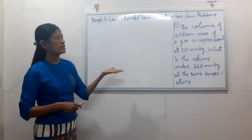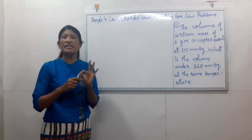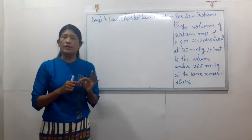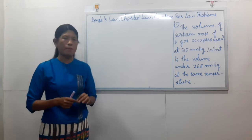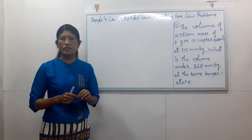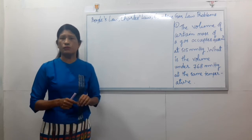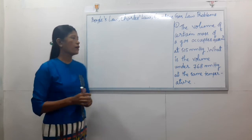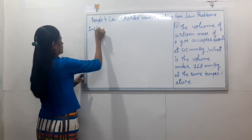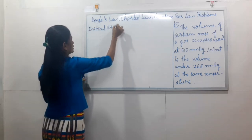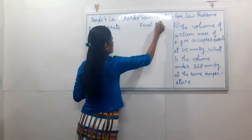We have to look at the equation for volume. V1 times P1 is equal to V2 times P2. Initial state and final state.